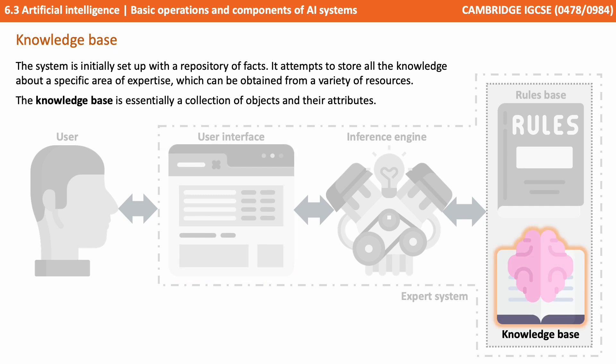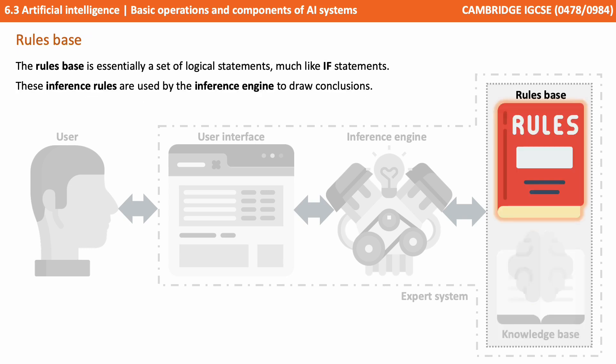There's a knowledge base. The system has to initially be set up with a repository of facts. It attempts to store all of the knowledge about a given area of expertise, and this can be obtained from a variety of expert sources. The knowledge base is essentially a collection of objects and all of their attributes. Next we have a rules base. This is essentially a set of logical statements much like if statements. These inference rules are used by the inference engine to draw conclusions.